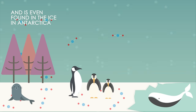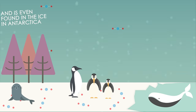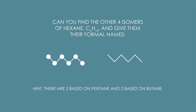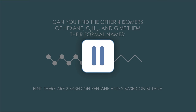So let's finish with a simpler example. Can you find the other four isomers of hexane, C6H14, and give them their formal names? Here's a hint: there are two based on pentane and two based on butane. Pause whilst you try to draw them out.